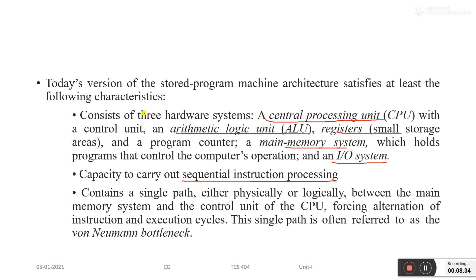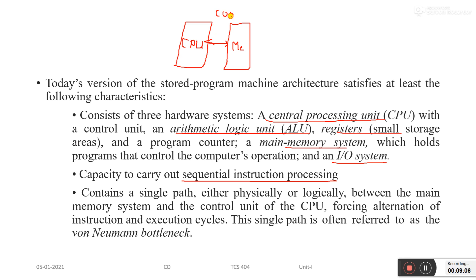This single path is often referred to as the Von Neumann bottleneck. The architecture has one CPU connected to memory via a single bus. Code and data are both stored in the same single memory, which slows down CPU processing — this is the bottleneck of Von Neumann architecture.